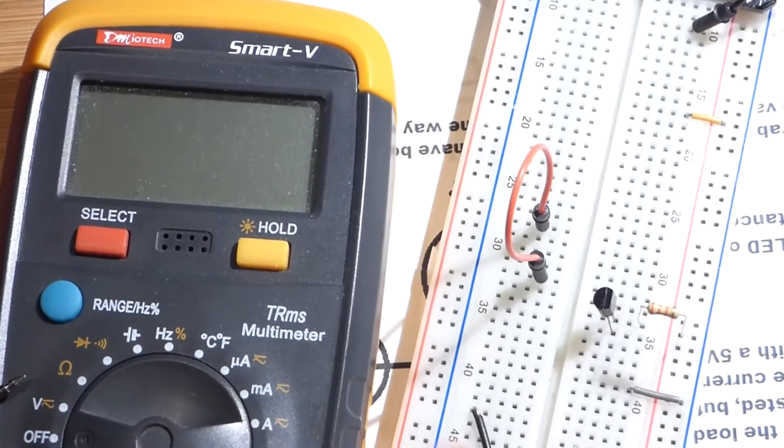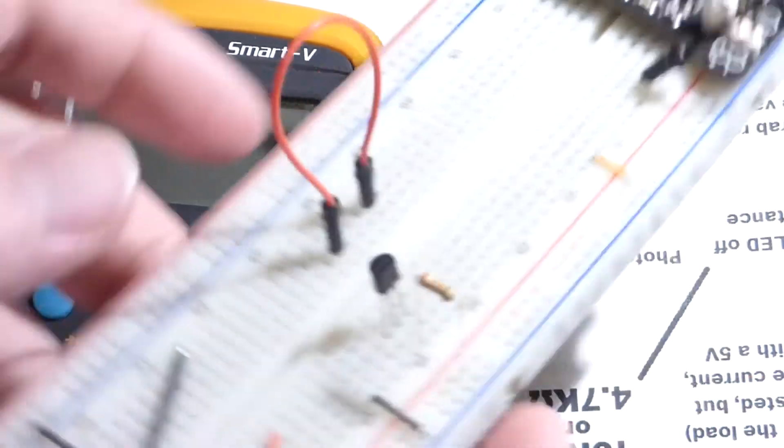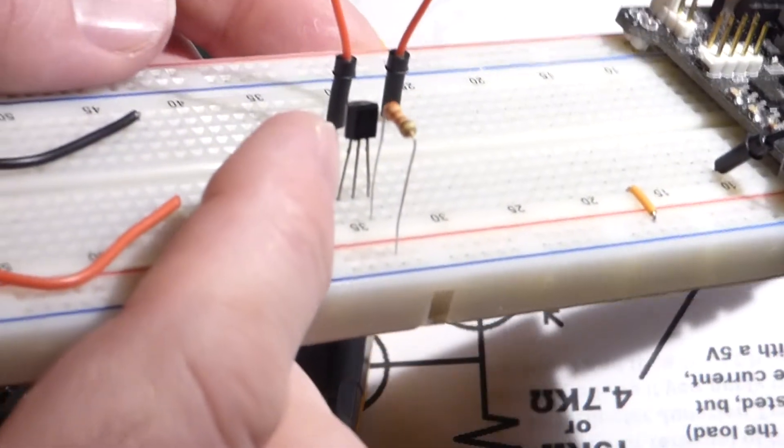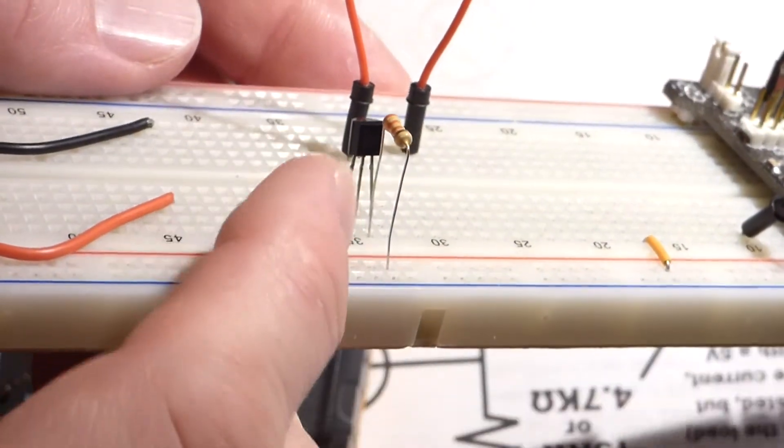This video is going to be a quick demonstration video. We're going to start off with this NPN transistor, a 2N3904.